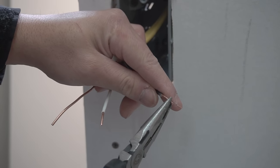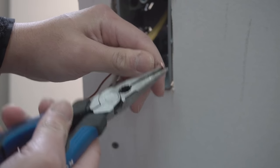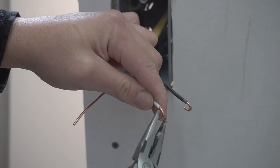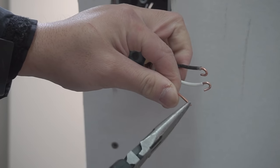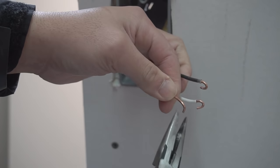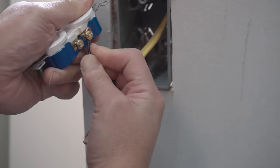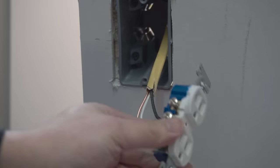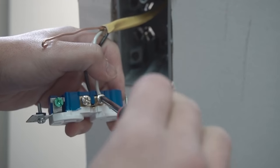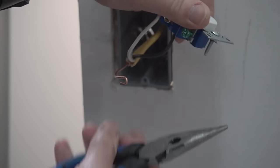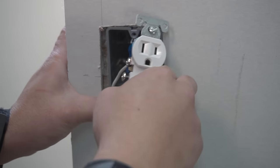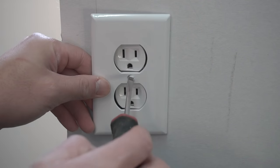We're going to take the hot black wire and make a loop with our needle nose pliers, same thing for our ground wire. Take your screwdriver and screw that in. Same thing for the other side and the ground wire. Now tighten up the ground wire. Now push all that wire in there and put on the cover.